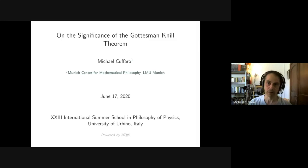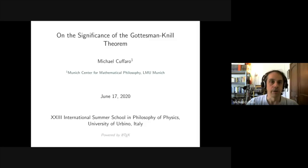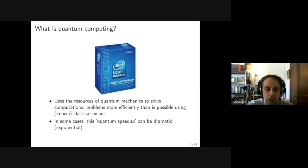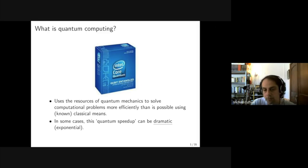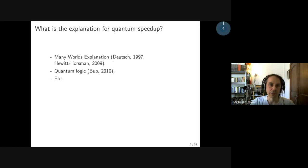What I'm going to be talking about specifically in this first talk is the Gottesman-Knill theorem. I mentioned this in passing yesterday, but we're going to look at it in a lot more detail now. So what is quantum computing? A quantum computer uses the resources of quantum mechanics to solve computational problems more efficiently than would be possible using at least known classical means. And in some cases, this quantum speedup can be dramatic — by dramatic, I normally mean exponential. So the question arises: what is the explanation for quantum speedup?